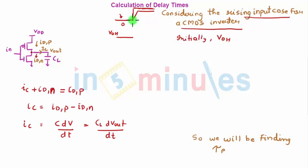When the input voltage switches from low to high, low means VOL to VOH. What do we know?